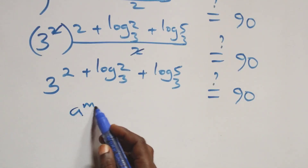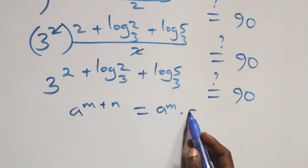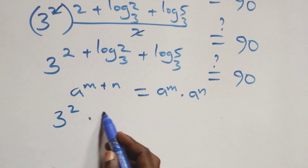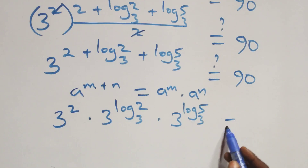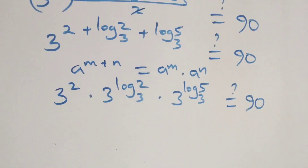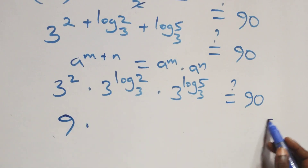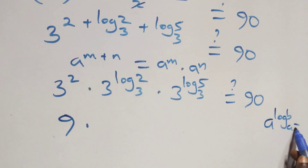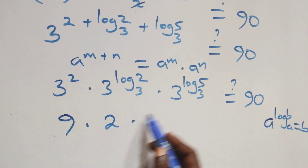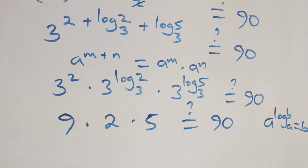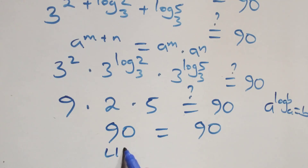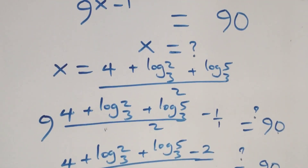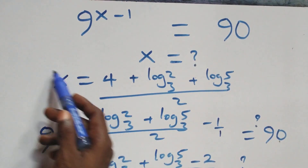We express 9 as 3 squared, raised to power 2 plus log₃2 plus log₃5, all over 2, equals to 90. The power 2 in the base and the 2 in the denominator cancel, giving 3 raised to power 2 plus log₃2 plus log₃5 equals to 90. Applying the rule a raised to power n plus m equals a^n times a^m, we have 3 squared times 3 raised to log₃2 times 3 raised to log₃5. Using the identity a raised to power log_a(b) equals b, this gives 9 times 2 times 5, which is 9 times 10, equals 90. Left hand side equals right hand side.